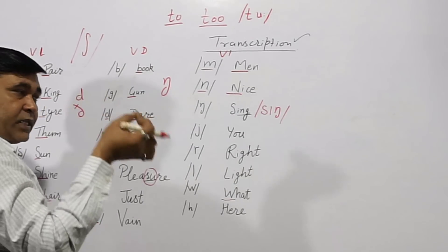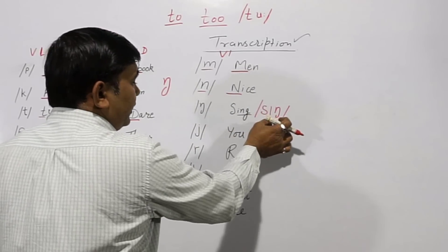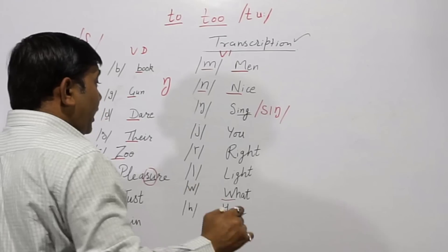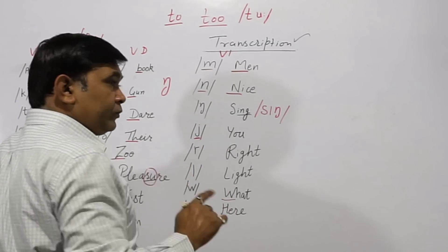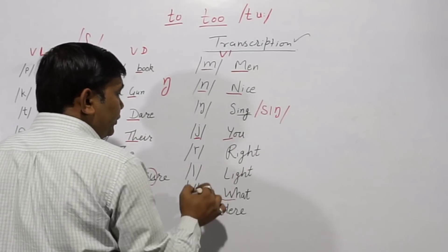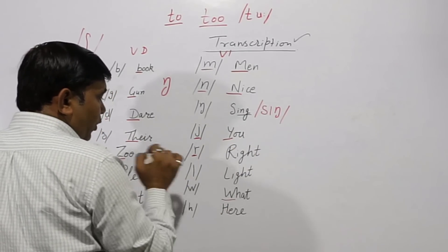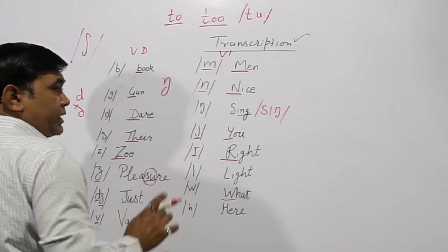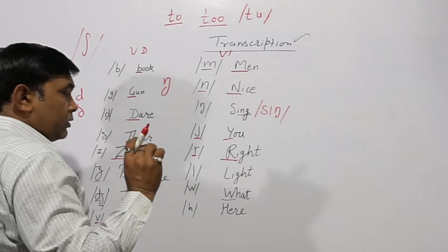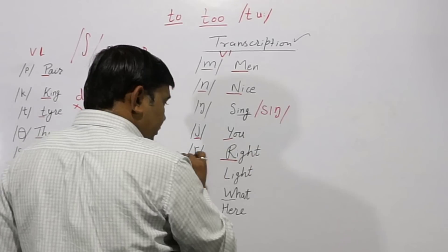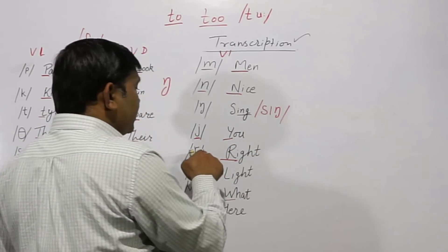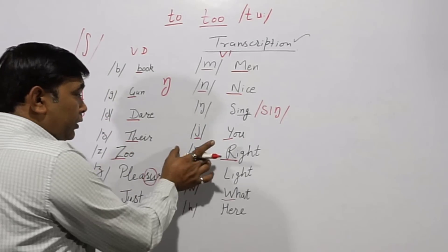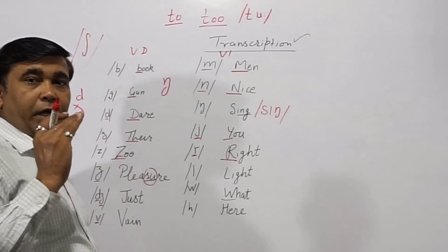The /ŋ/ is the 'ang' type sound — as in 'sing'. This is small j type symbol — /j/ — as in 'you'. This is small r in print form — as in 'right'. And this symbol represents /r/ — when not followed by any vowel sound, the r is not pronounced in English.